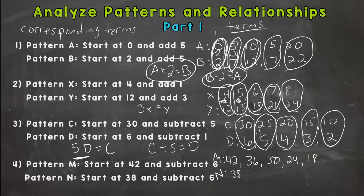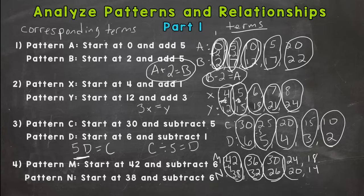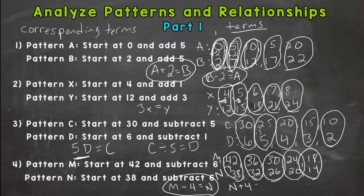And then let's do pattern N. And we start at 38 and subtract 6. 38, 32, 26, 20, 14. And it looks like we're decreasing from the top going down to the bottom. So it's either going to be subtraction or division. And 42 minus 4 is 38 for our first set of corresponding terms. 36 minus 4 is 32. 30 minus 4 is 26. 24 minus 4 is 20. And 18 minus 4 is 14. So pattern M minus 4 will give us our corresponding terms in pattern N. Or the opposite, if we go bottom to the top, N plus 4 will give us our corresponding terms in pattern M.